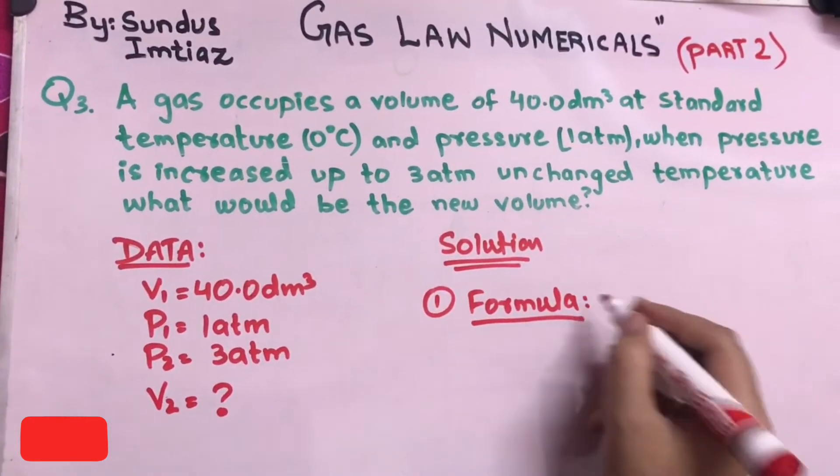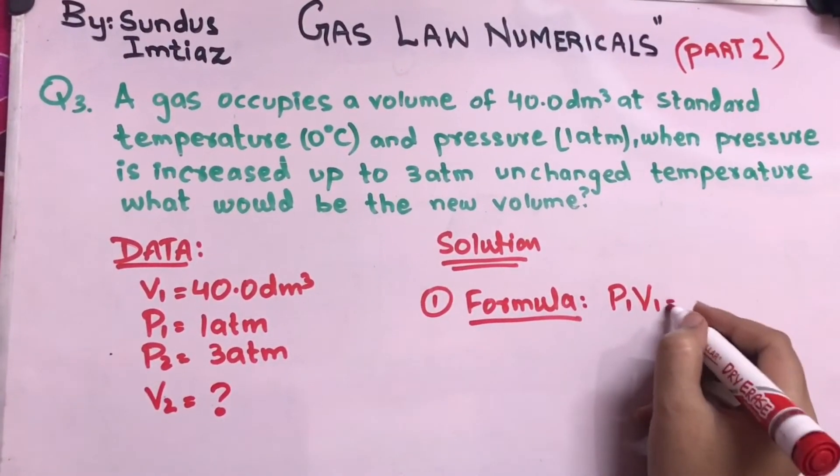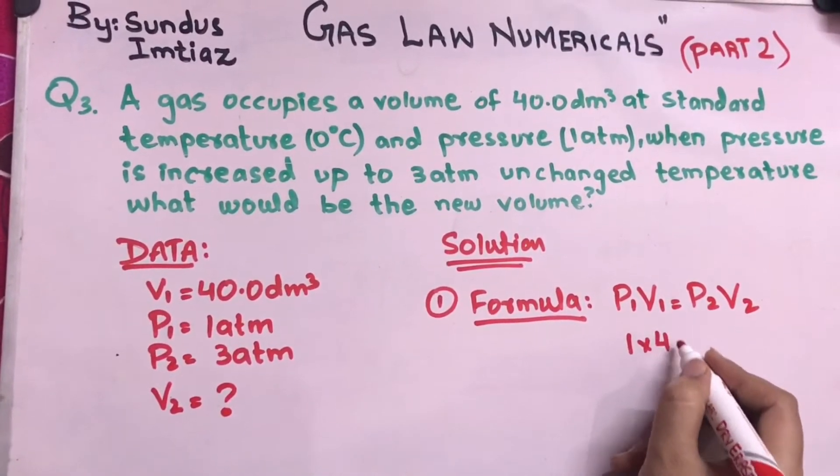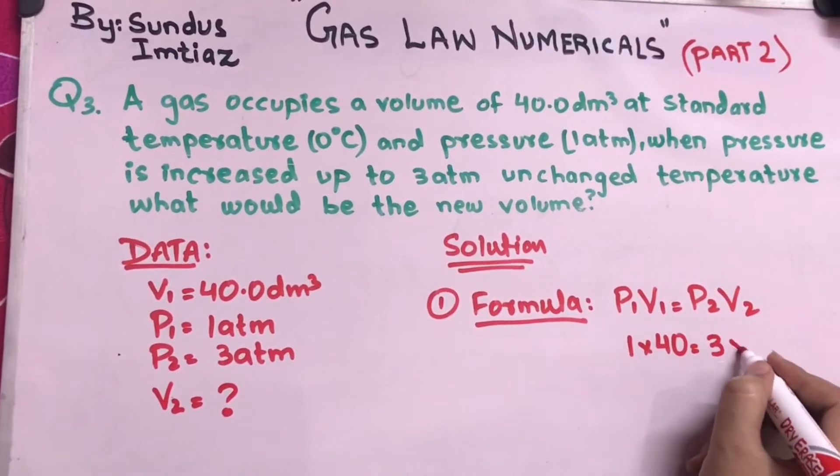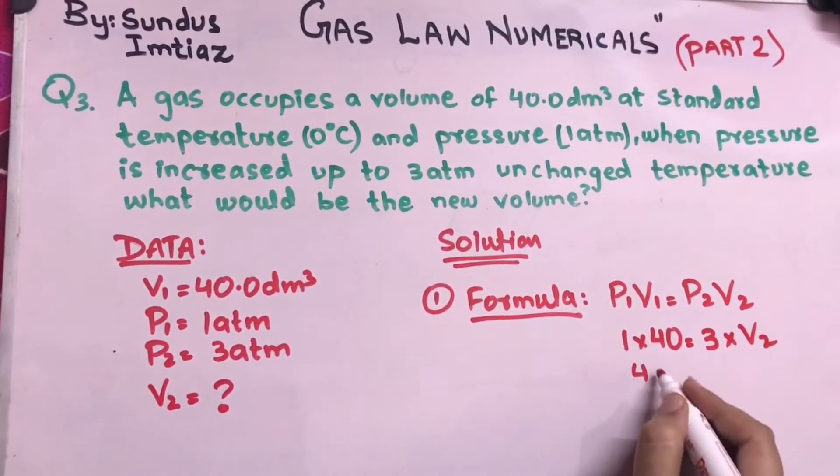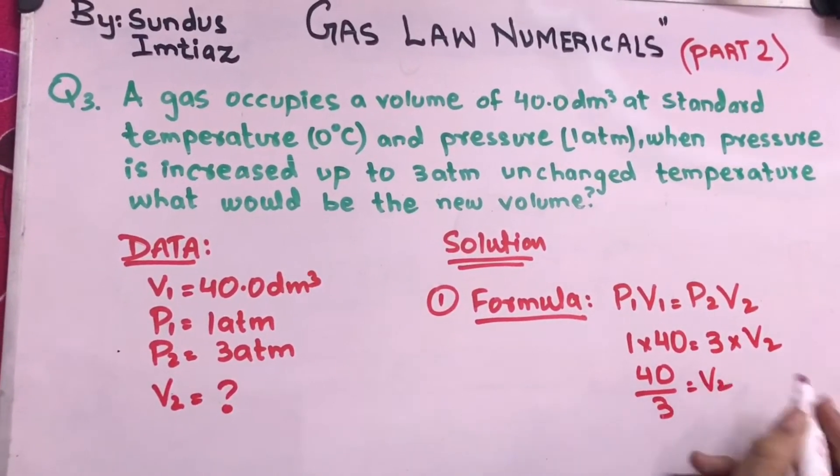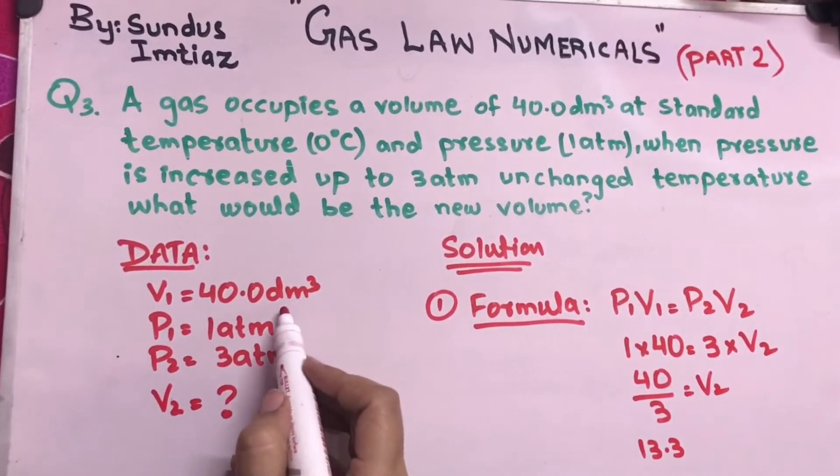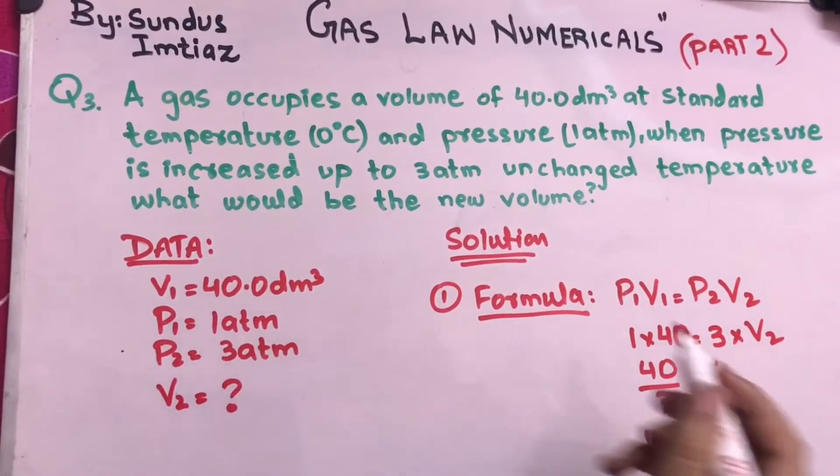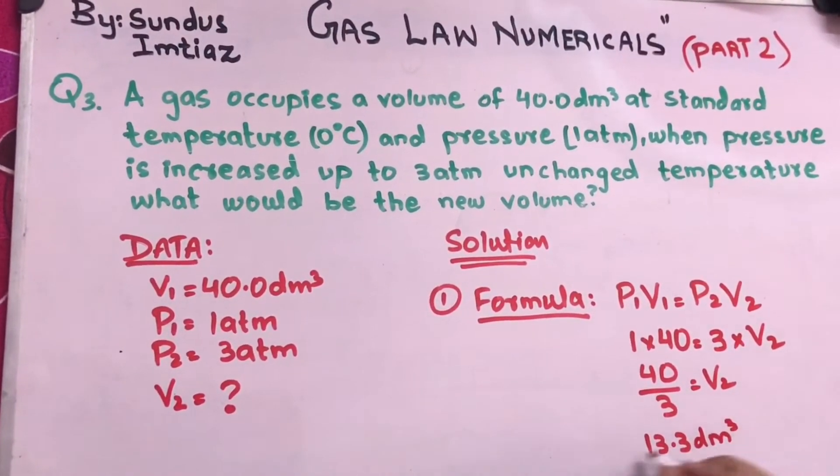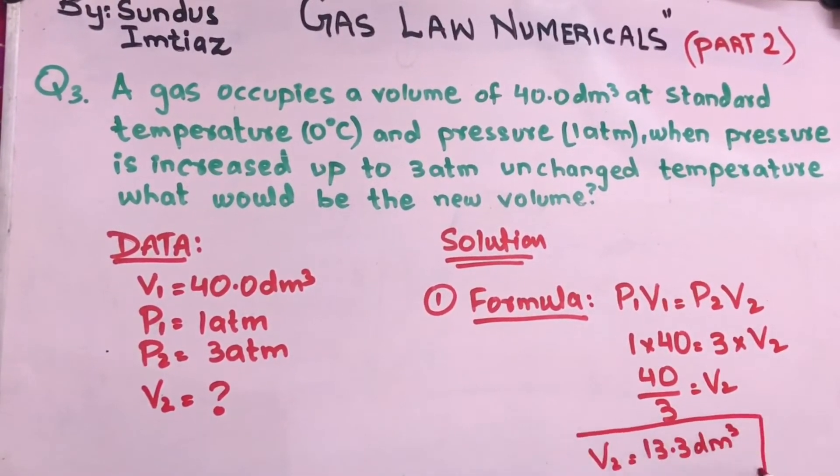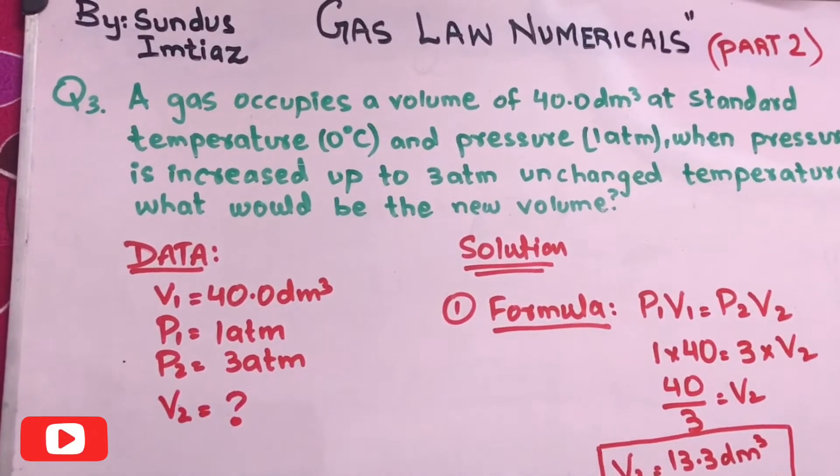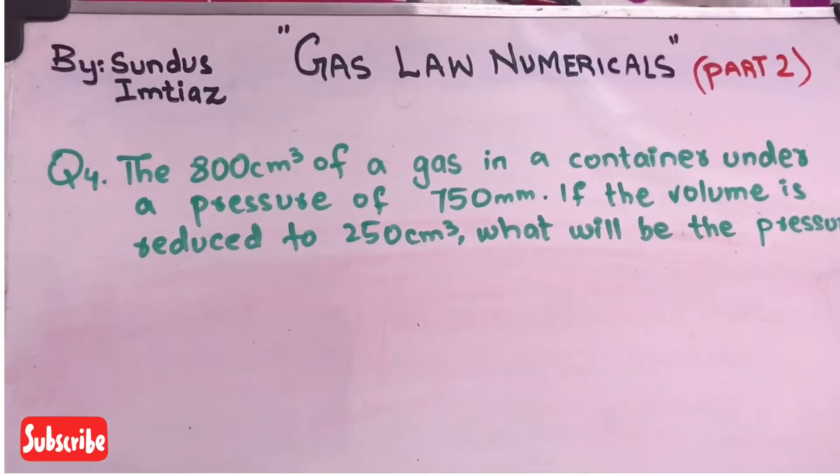And p1 is given here, there is 1 atm atmospheric, and p2 is given, the final pressure they have increased from 1 to 3 atm. Now the new volume is required. So let's solve this question. First our heading would be the formula. We have to identify the formulas for the numericals. Formula is p1v1 equals p2v2 according to Boyle's law. Now p1 is 1, v1 is 40, p2 is 3, and v2 is unknown. 1×40 is 40 divided by 3. After dividing you will get 13.3 and the unit of the second volume would be the same as they have mentioned in the first volume, so decimeter cube will be our volume. So I am writing the v2 here in this box to show that this is the final answer.